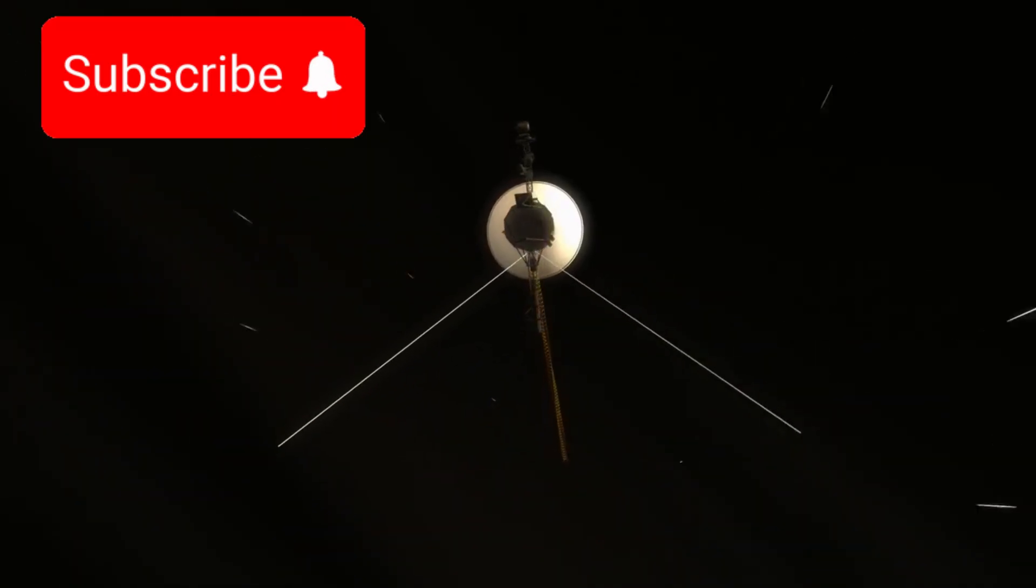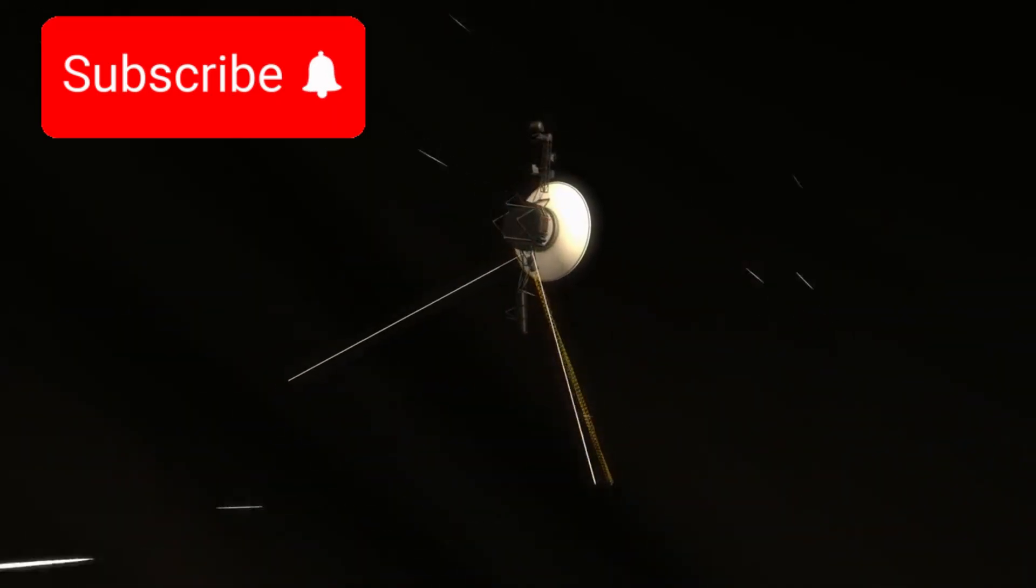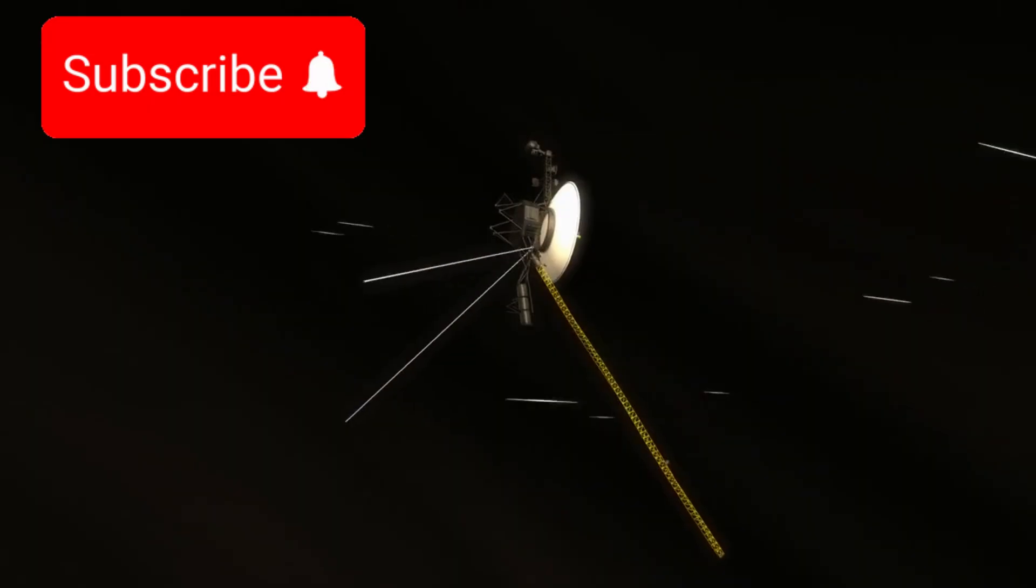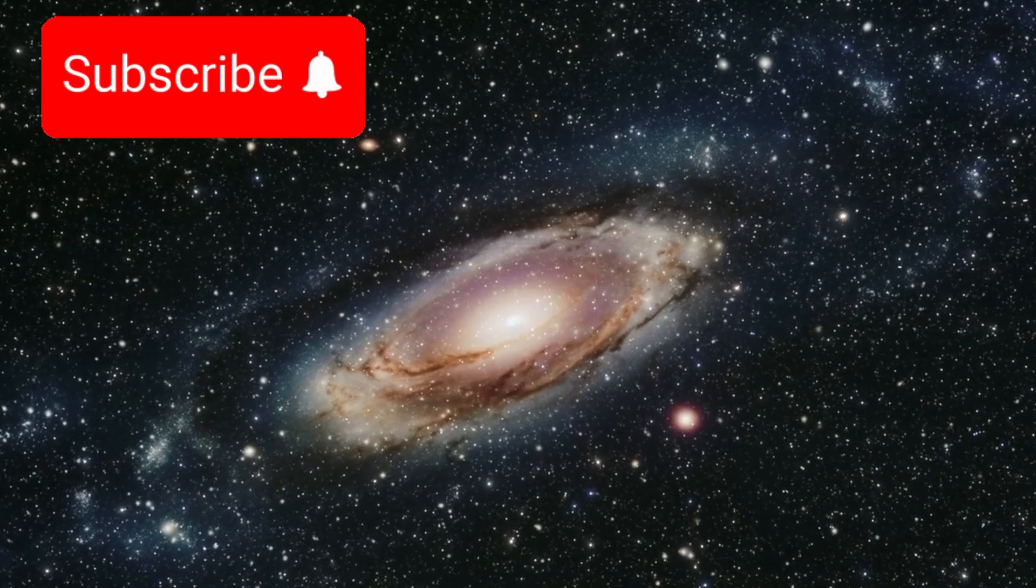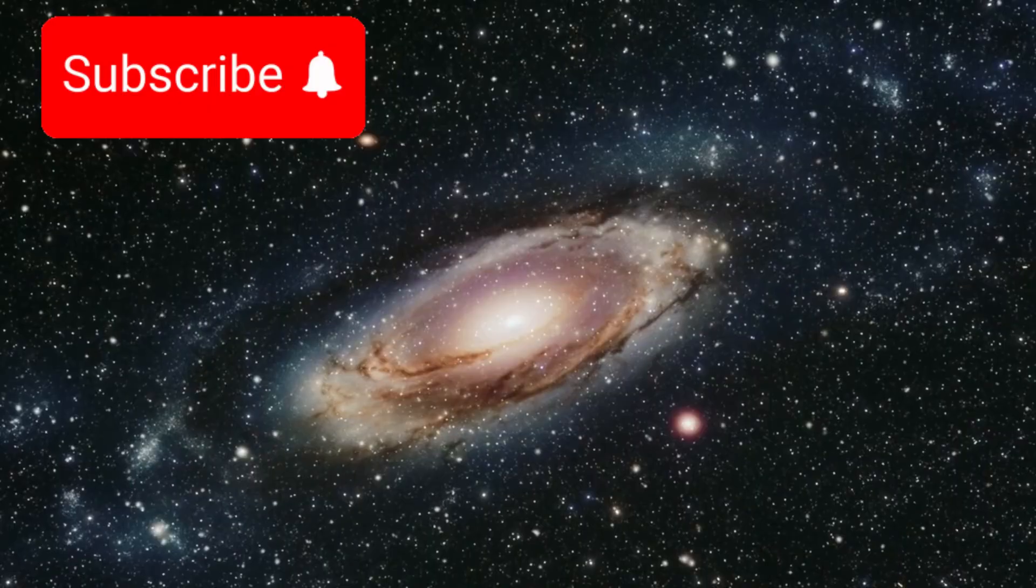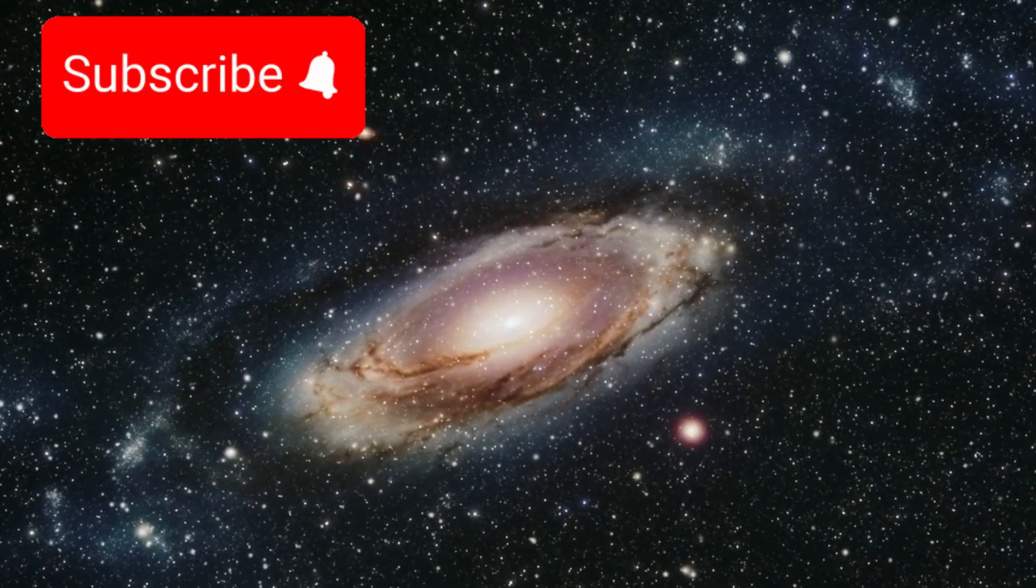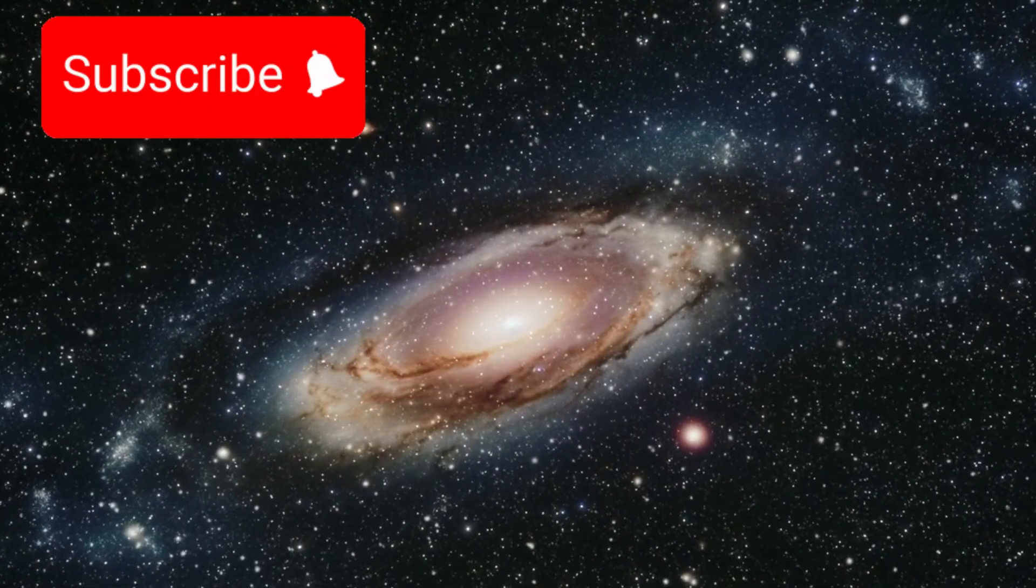But even after the final transmission fades into the background noise of the universe, Voyager 1 will continue its journey. Unpowered, unsteered, and unseen, it will drift among the stars for millions, even billions of years, untouched by gravity wells or planetary poles.